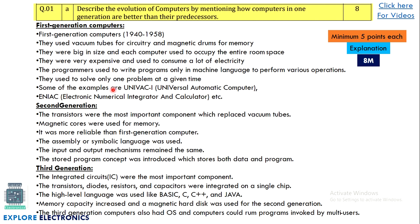Make sure you give examples for each generation. For the first generation, some examples are ENIAC. For the second generation, mention the important points that differentiate it from the first generation. Since the question clearly asks how computers in one generation are better than their predecessors, make sure the points you write for each generation highlight what makes that generation better than the previous one.